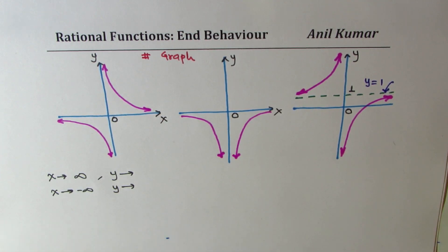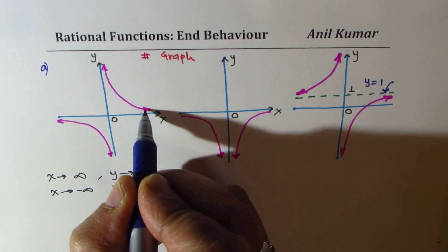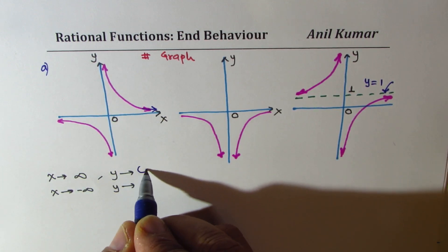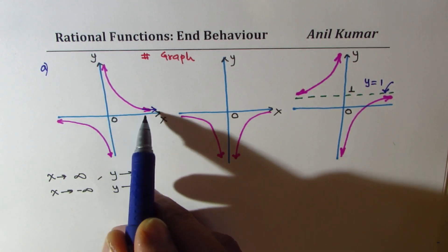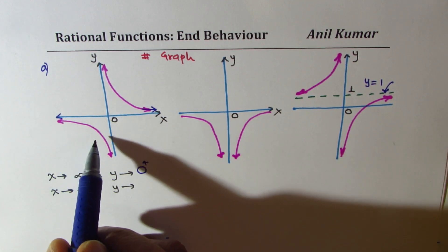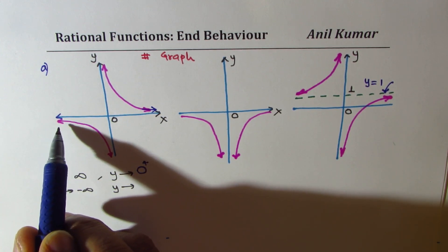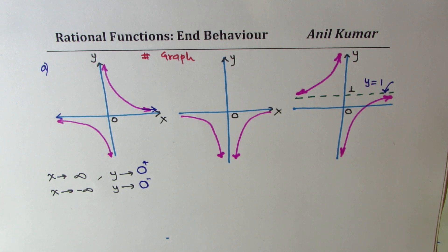Let's take the very first graph, call it A. When X approaches positive infinity — that means a large value — Y is approaching 0, and since it is positive we write it as 0+, meaning the function is approaching 0 from above. When X approaches negative infinity, we look at the left extreme and notice it approaches 0 but below the X-axis, so the function is negative.